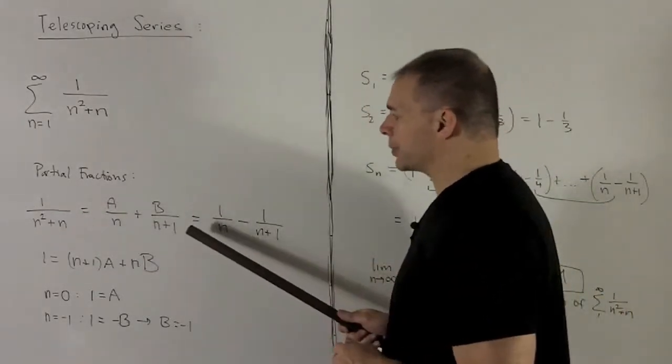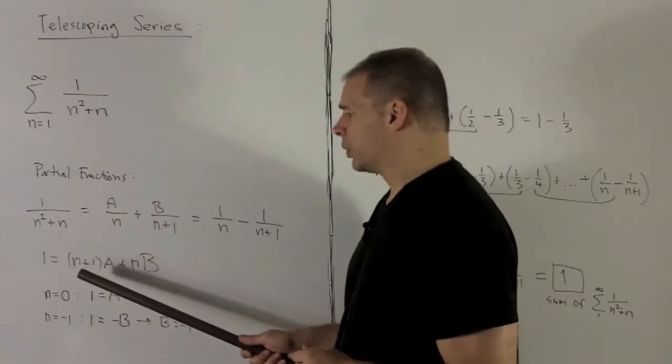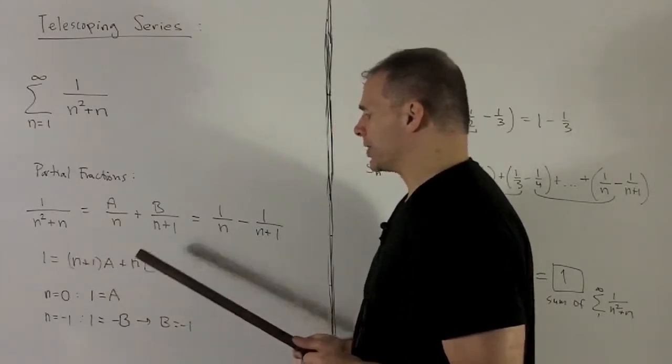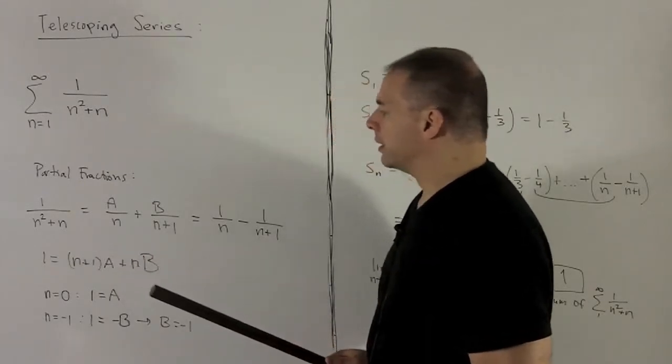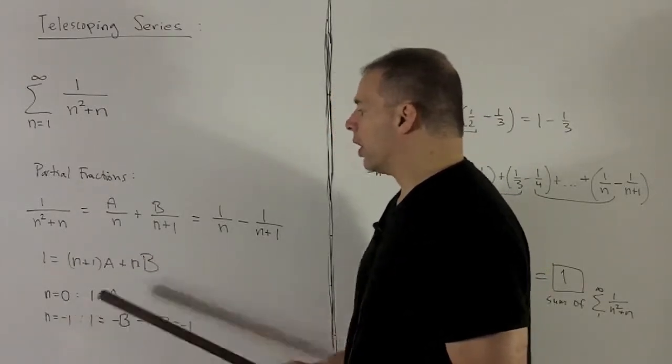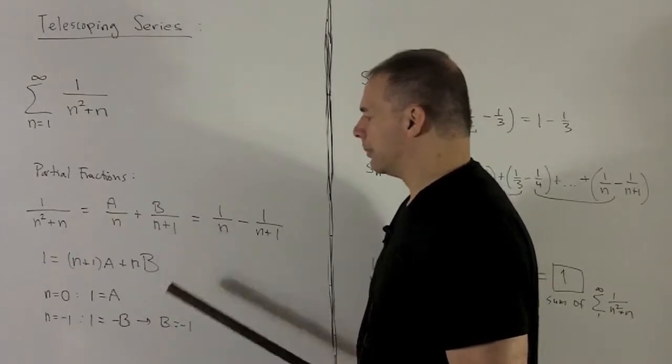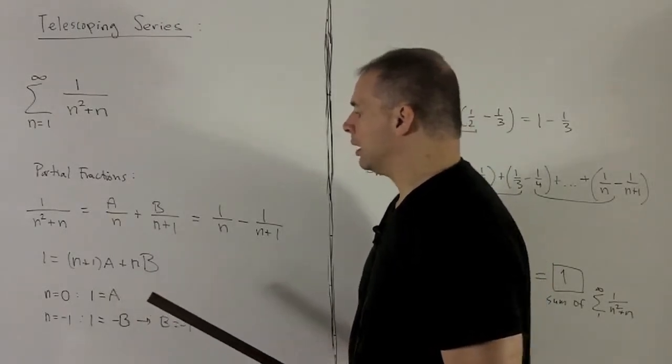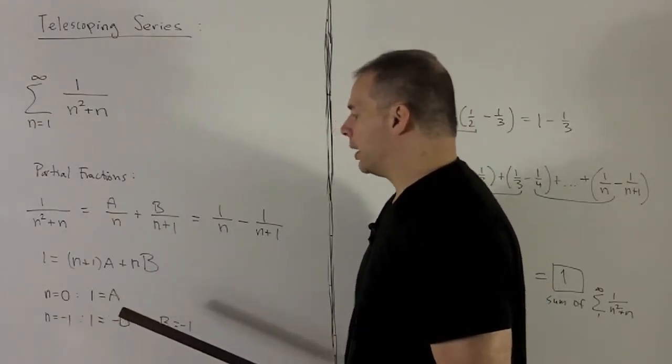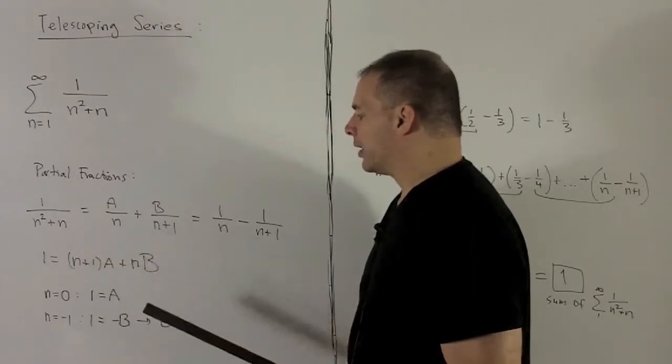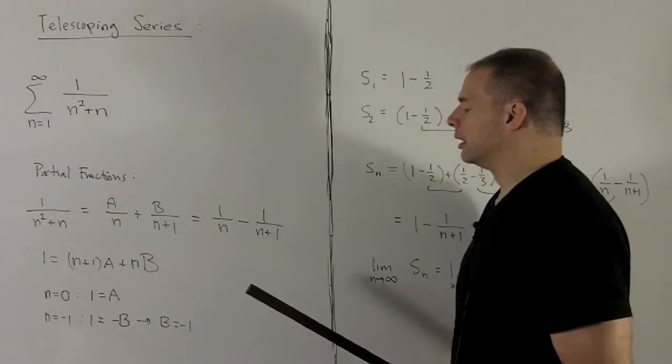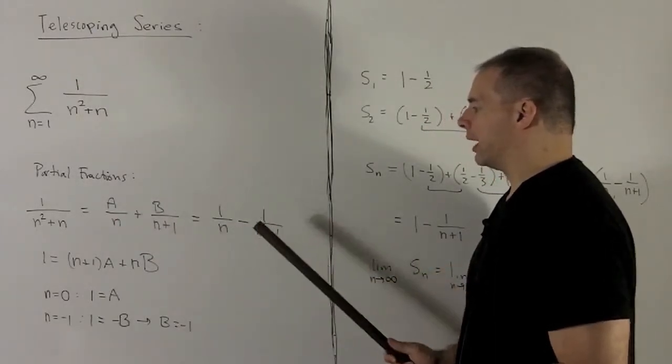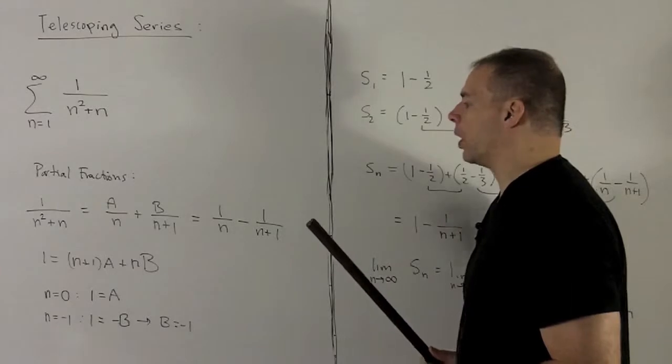We clear the denominators. That's going to be 1 equals n plus 1 times a plus n times b. And then I can get a and b just by targeting different values of n. So if I let n equal 0, the b term drops out, and I'm left with a equals 1. If I let n equal minus 1, the a term's going to drop out, and I'm left with 1 equals minus b, or b equals minus 1. So when I pull this apart, I'm going to get 1 over n minus 1 over n plus 1.